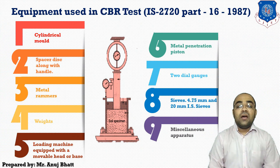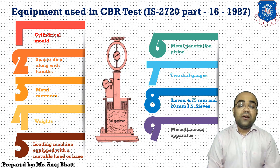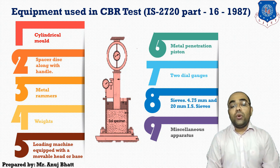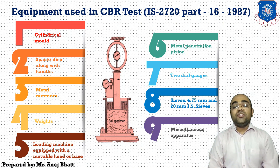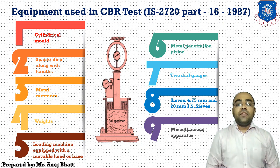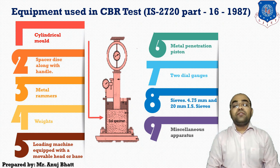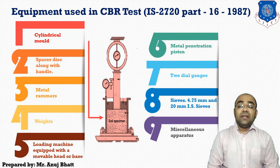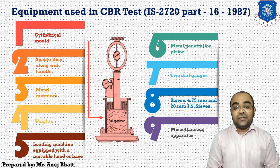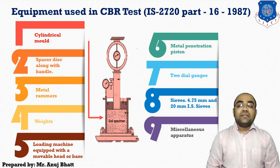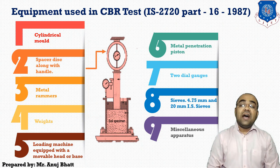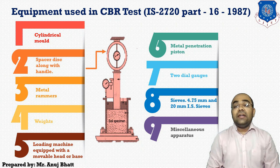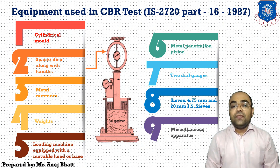The equipment includes: a cylindrical mold with an inside diameter of 150 mm and height of 175 mm, provided with a detachable extension collar of 50 mm height and a detachable perforated base plate of 10 mm thickness. The next is the spacer disc, with a diameter of 148 mm and height of 47.7 mm, along with a handle.